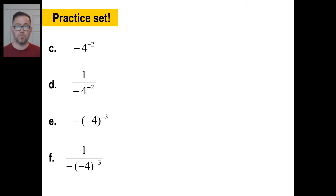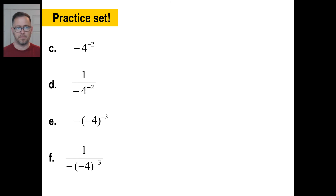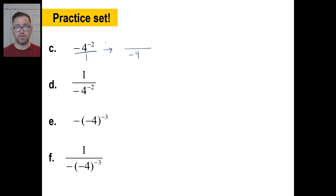Go ahead and give C a whirl. This lineup looks horrible — it's like a nightmare. Let's put it over a one. By definition, we rewrite this fraction: this chunk goes down to the bottom. The negative stays the same, the four stays the same, and the only thing that changes is the negative two turns into a positive two. We have a one on top. Four squared is 16, and the opposite of four squared is negative 16. The whole thing is negative one-sixteenth.